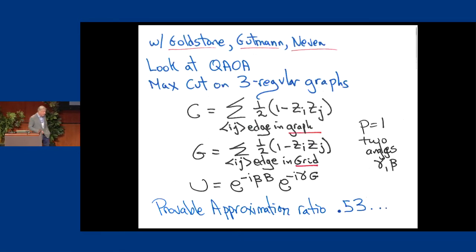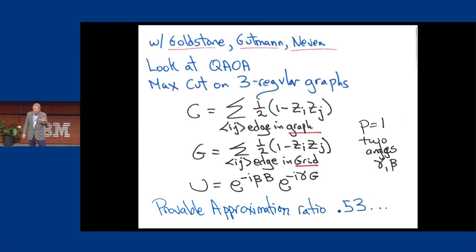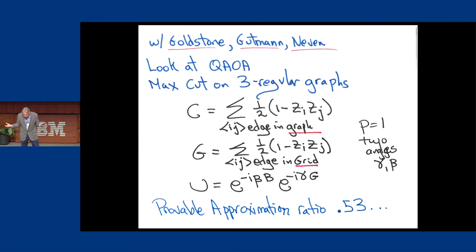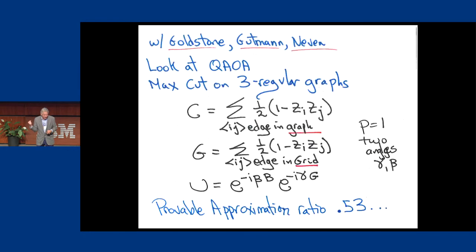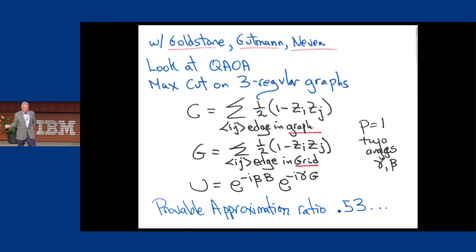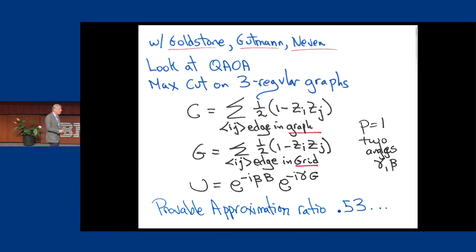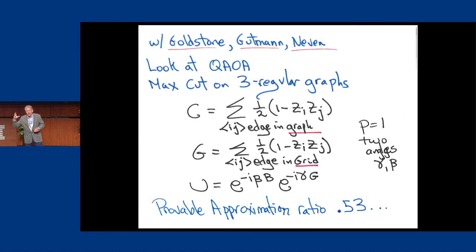Of course, 0.53 is not as good as 0.69, but the grid is not aligned with the objective function, and 0.53 is better than random guessing. As a proof of principle, this shows you can do optimization using the unitaries given by the hardware while evaluating a different objective function. It evades the embedding problem because the unitaries don't need to depend on the cost function structure.